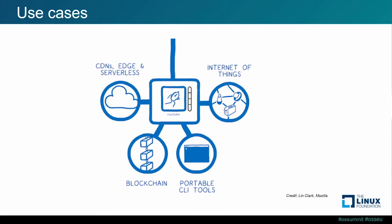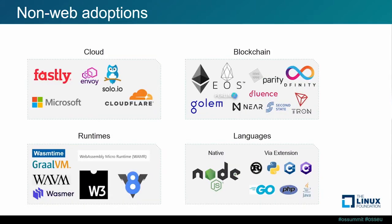WebAssembly is being adopted beyond the browser across a handful of categories. Cloud is probably the most interesting and first to come on the scene — everything from Cloudflare, Fastly, and Microsoft taking traditional server workloads and running them in a WebAssembly VM, or extending the cloud through projects like Envoy proxy. Blockchain really got started when the Ethereum Foundation announced they'd move their proprietary Ethereum VM to a WebAssembly-based implementation, and many other projects followed suit.